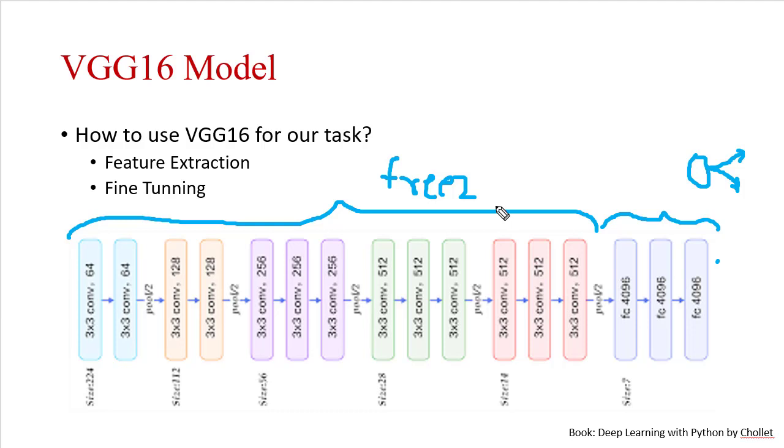So this is all about feature extraction. The second method is fine tuning. In fine tuning, we are going to unfreeze some of the higher layers of the frozen part.